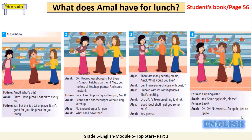Open your students book page 56, exercise number two. You are going to read the text to find out what Amal has for lunch. At lunch time: Amal, what's this? Pizza. I love pizza. I eat pizza every day. Yes, but this is a lot of pizza. It isn't good for you. No pizza for you today.